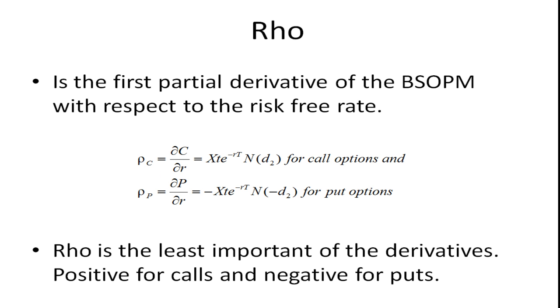Rho is the first partial derivative of the Black-Scholes option pricing model with respect to the risk-free rate. So R for risk-free. And you get these two formulas here. This one with respect to the call option. And this one with respect to the put option. And Rho is the least important of the derivatives. It's positive for calls and it's negative for puts. It may have some value if the option expires a long time from now. But if it's not an option that has a long time until expiration, then Rho is not particularly important.